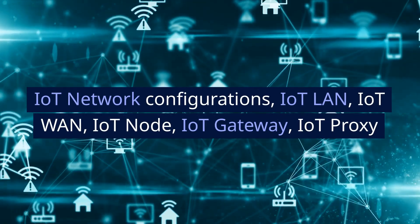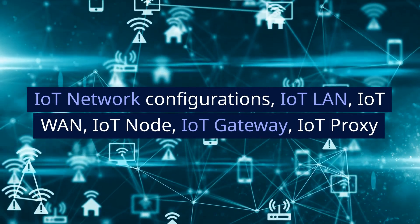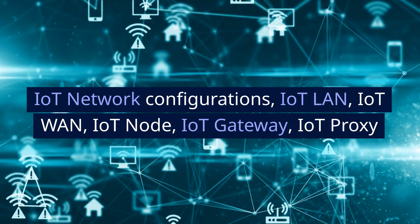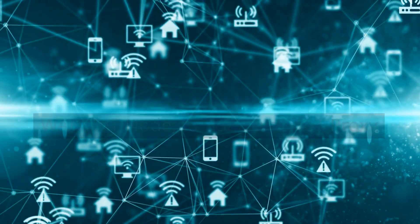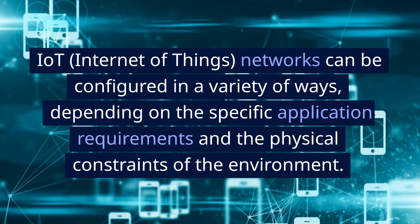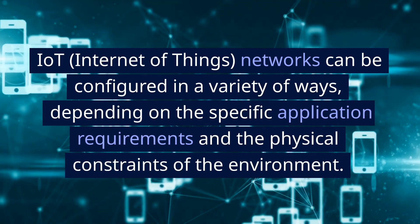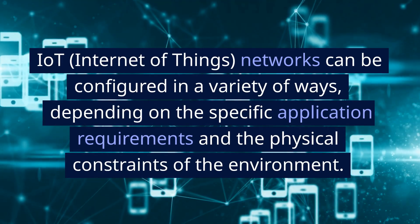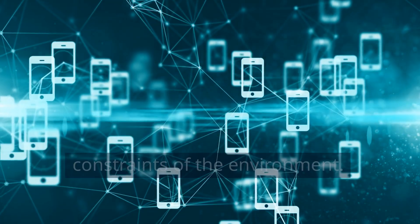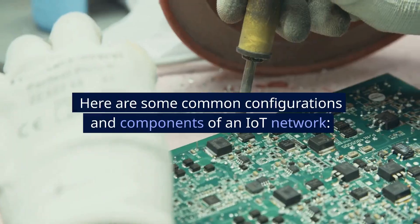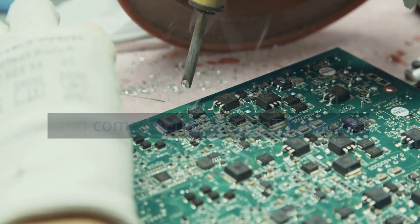IoT Network Configurations: IoT LAN, IoT WAN, IoT Node, IoT Gateway, IoT Proxy. Internet of Things networks can be configured in a variety of ways, depending on the specific application requirements and the physical constraints of the environment. Here are some common configurations and components of an IoT network.